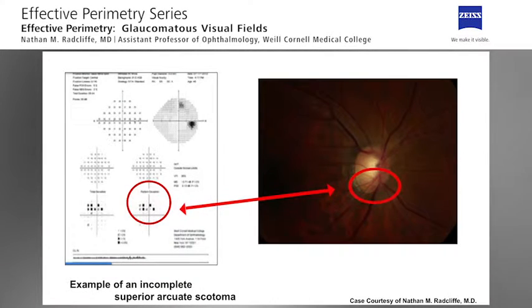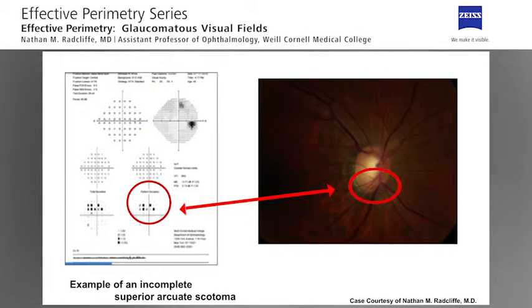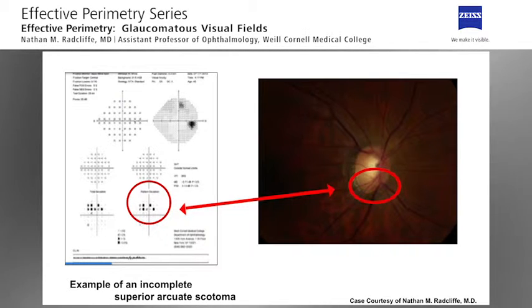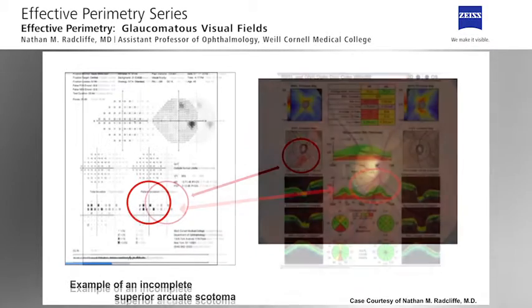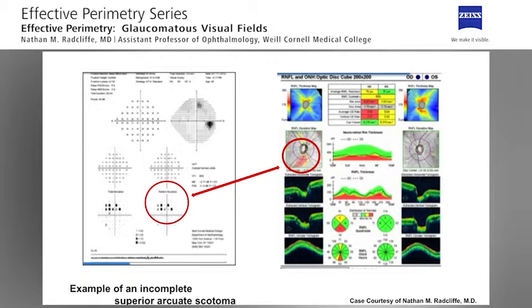Let's examine the visual field of a 48-year-old woman with glaucoma. There is an incomplete superior arcuate scotoma on the visual field which is suggestive but not definitive of glaucoma. An examination of the optic nerve photograph demonstrates an inferior retinal nerve fiber layer defect as well as a small splinter hemorrhage. The optical coherence tomography confirms the diagnosis with an inferior retinal nerve fiber layer defect.